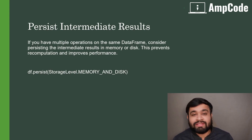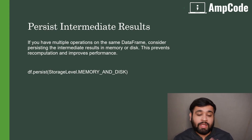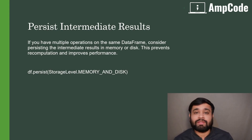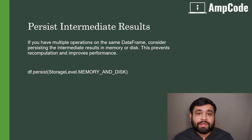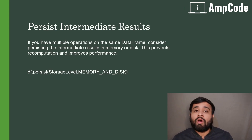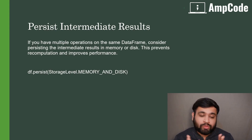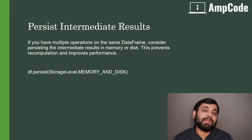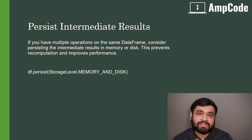Persisting is straightforward: you call df.persist() with a storage level argument, such as MEMORY_AND_DISK. This storage level will store your data either in memory, on disk, or a combination of both. It totally depends on how much data you are handling and what types of operations you are going to apply on your subsequent DataFrames.